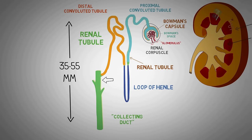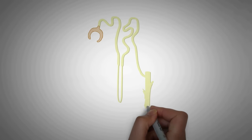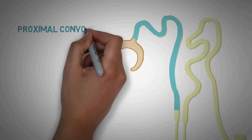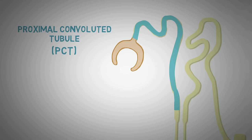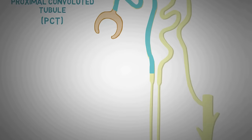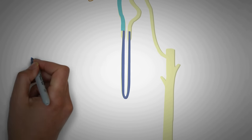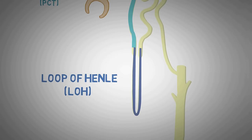The distal convoluted tubule in turn ends into the collecting duct. The first part of the tubule is the proximal convoluted tubule — proximal because it is close to the Bowman's capsule, and convoluted meaning it is a highly folded structure that increases the overall length of the tubule in a small space. The proximal tubule is located in the cortex of the kidney and leads to the loop of Henle, which forms a loop located in the renal medulla.